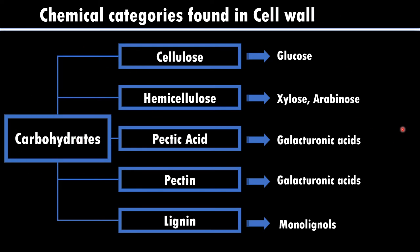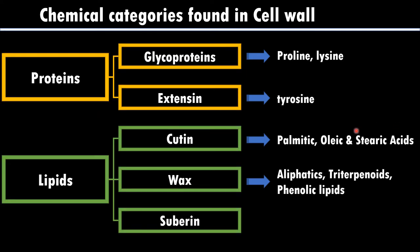We can also observe the presence of proteins inside the cell wall. These proteins can be considered as glycoproteins and extensins. Glycoproteins are basically made up of proline, lysine, and hydroxyproline amino acids. Extensin is made up of tyrosine, which is the amino acid observed in extensin.